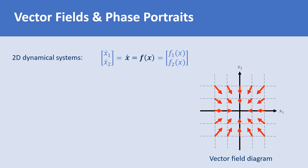Note that the length of arrows are not the same. If an arrow is short, it means that x changes slowly at this point, and if it's long, it means it changes quickly.